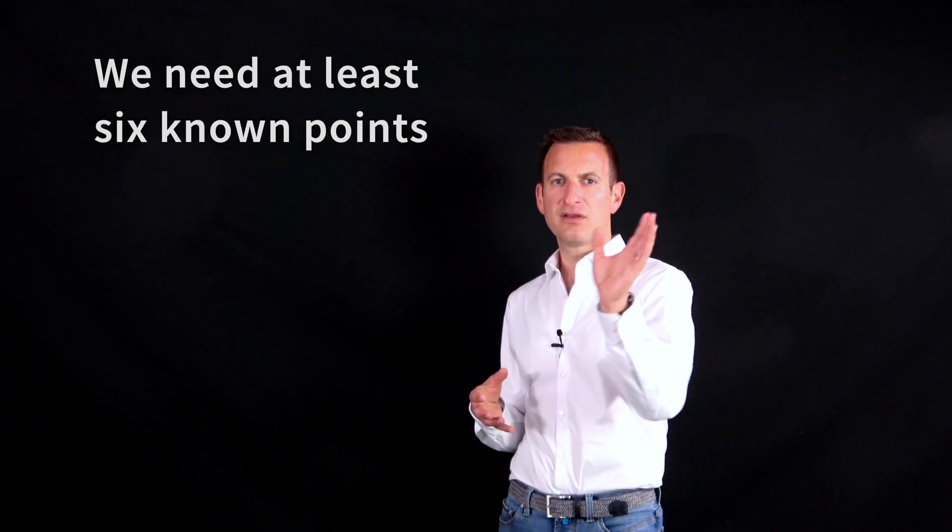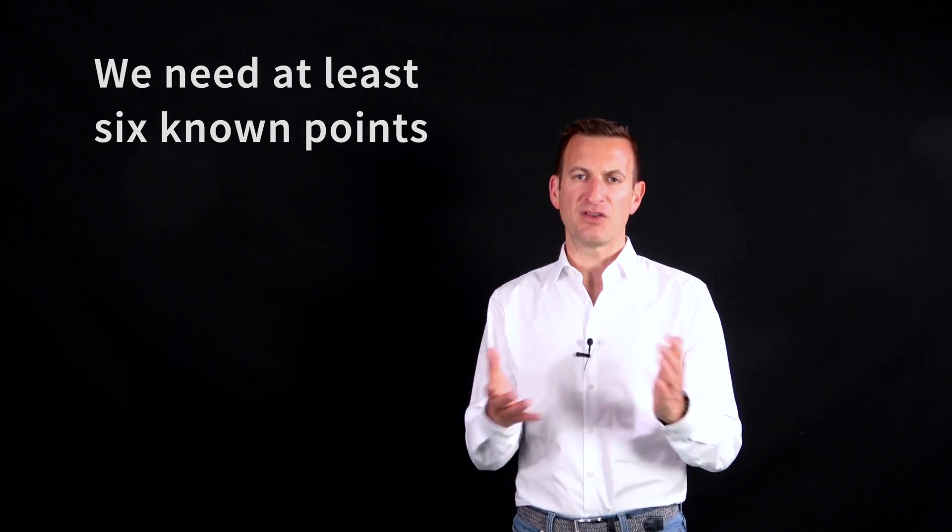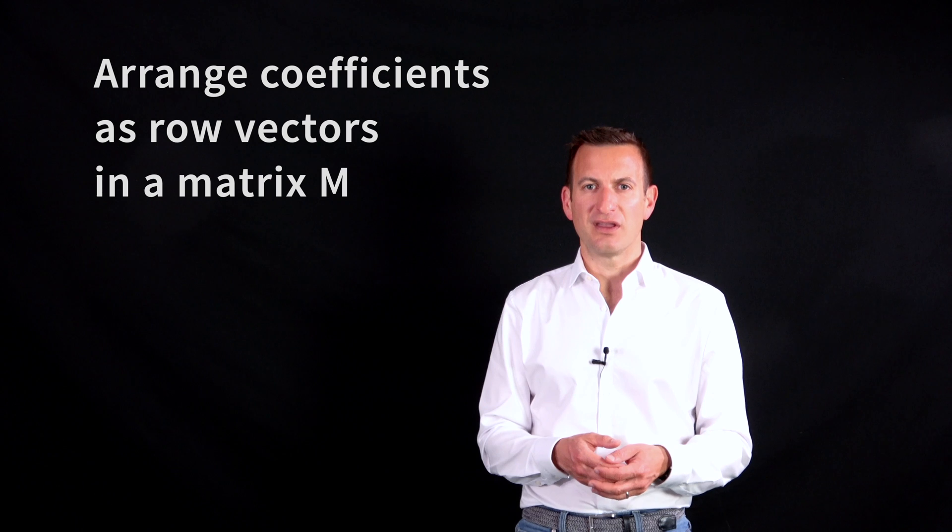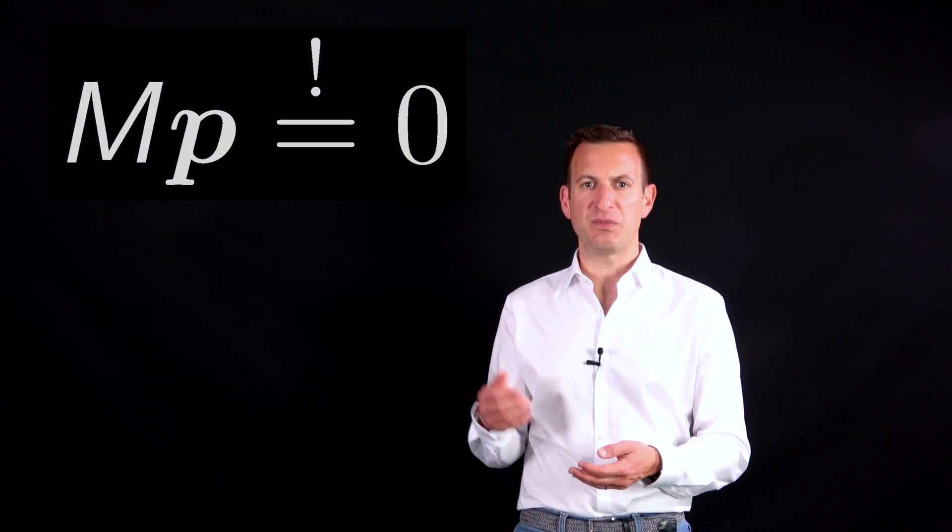So every point gives me two of those equations. I take six points at least, or I can also use more, in order to estimate my 12 unknowns. And I can arrange those coefficient vectors in a matrix called M, so that M times P must be equal to 0.